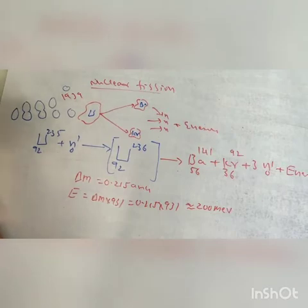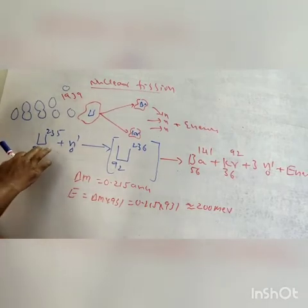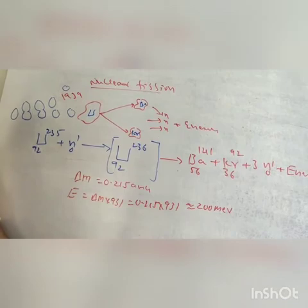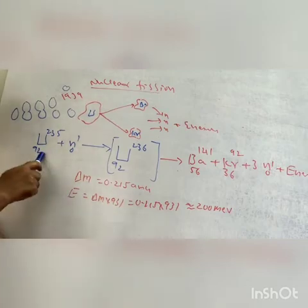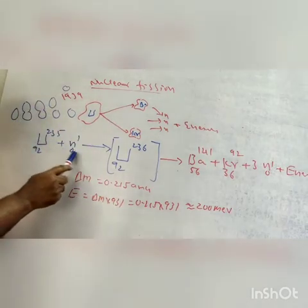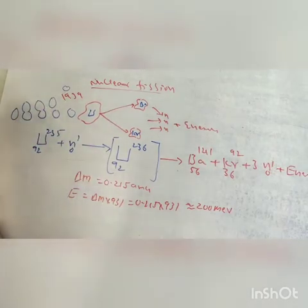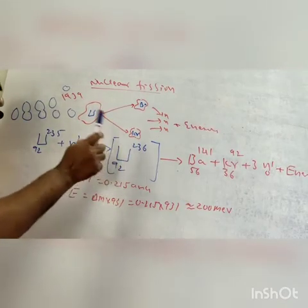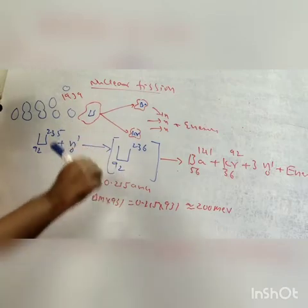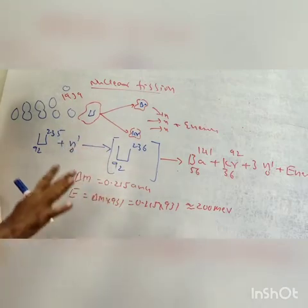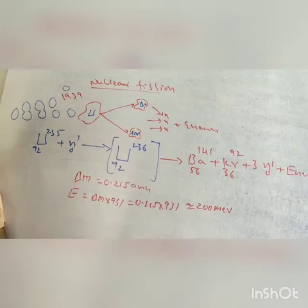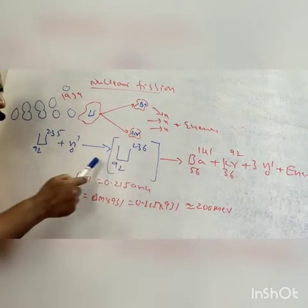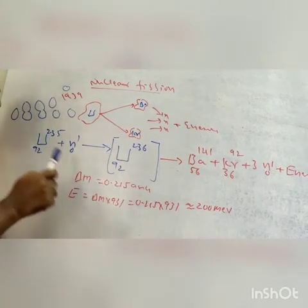Uranium-238 is natural uranium. Here is uranium-92-235, slow neutron which is bombarded. Slow neutron absorbed. Highly unstable uranium-92-236 nucleus. This is the nuclear fission.